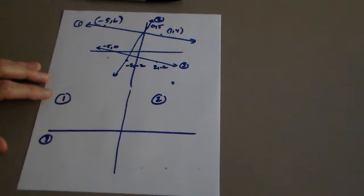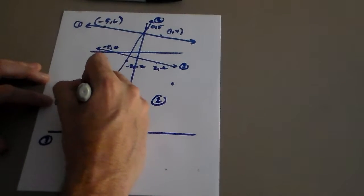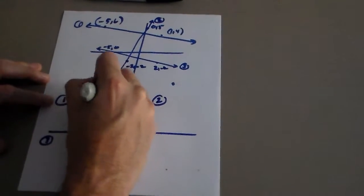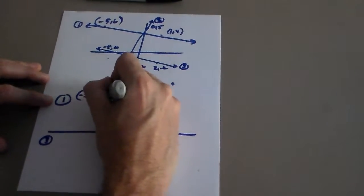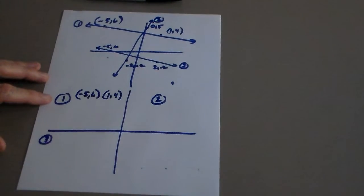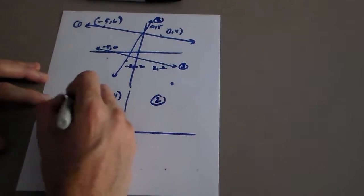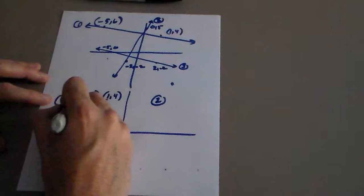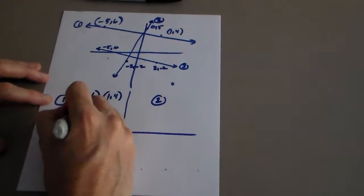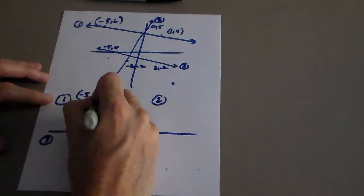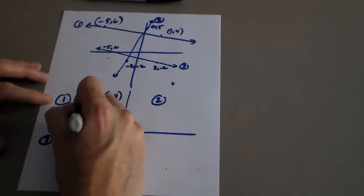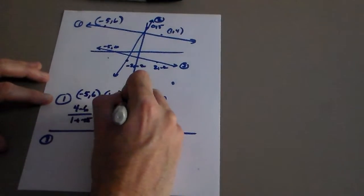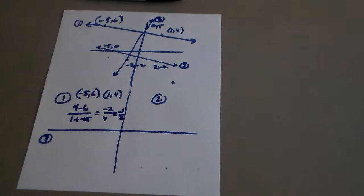So the slope for line one: one point is negative five, six, and the other point is one, four, so we're going to find that slope. Let's do it. This is going to be four minus six over one minus a negative five. So that's going to be negative two over four. So it looks like I get negative one-half for that slope.